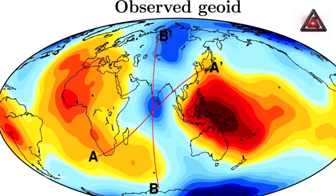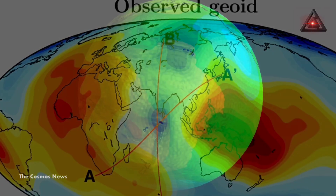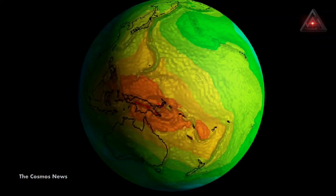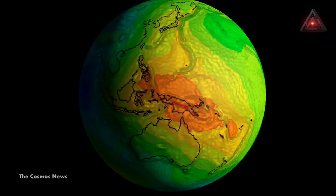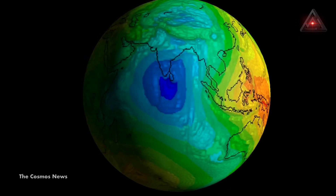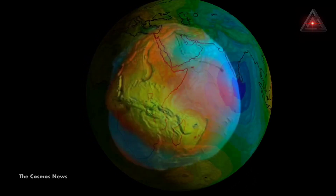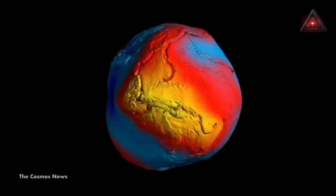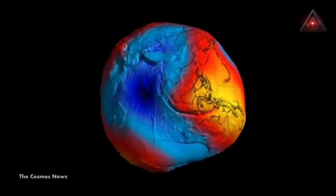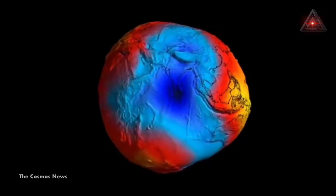In the study, scientists ran computer simulations to trace the origin of the gravity hole by reconstructing the last 140 million years of plate tectonic movements. Since the Earth is not a perfect sphere and is bulged towards the equator, the planet's gravity is not even across its geographical regions.